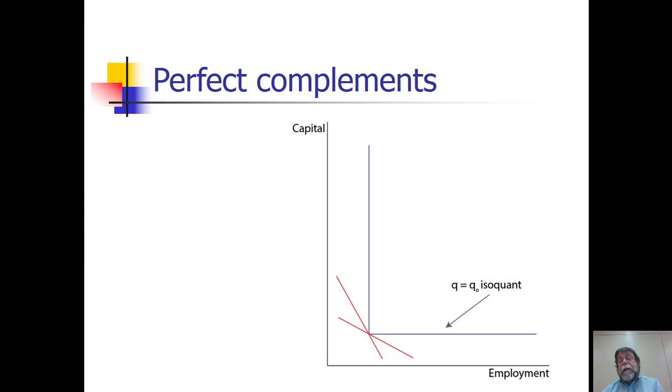As this diagram suggests, the least cost combination of inputs, no matter what relative factor prices are, will occur at this corner, at the vertex. So the two isoquant curves there have quite different slopes, but we see the lowest level of cost still occurs right at that point. And in this case, the elasticity of substitution is zero. There's no substitution that takes place.